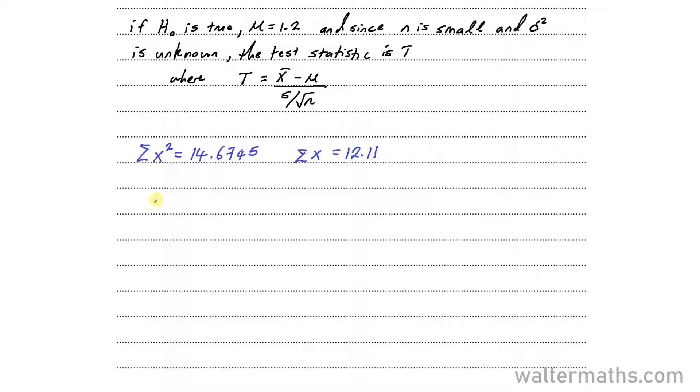We want the sample mean x̄, which is found by sum of X over n. In this case, the sum is 12.11 and it's divided by n. In this case, n is 10. So we are going to get that as 1.211.